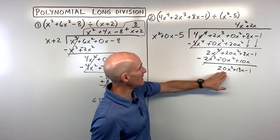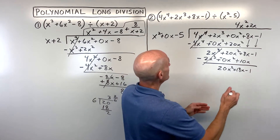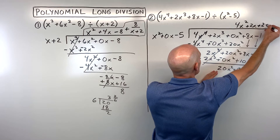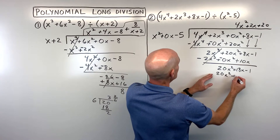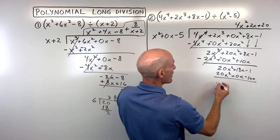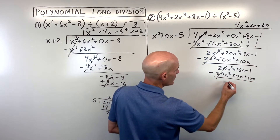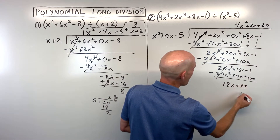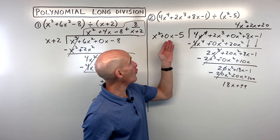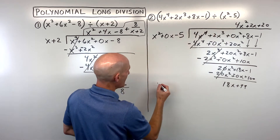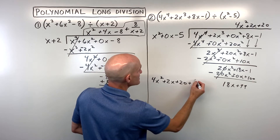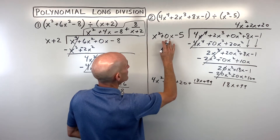Now we're trying to get the 20x squared. What times x squared equals 20x squared? That's going to be 20. When I distribute the 20, I get 20x squared plus 0x minus 100. We change the signs to the opposite and add — those first terms cancel — and we're left with 18x plus 99. Since 18x is first degree and the divisor's leading term is x squared (second degree), this is our remainder. The final answer is 4x squared plus 2x plus 20, plus the remainder (18x plus 99) over (x squared minus 5).